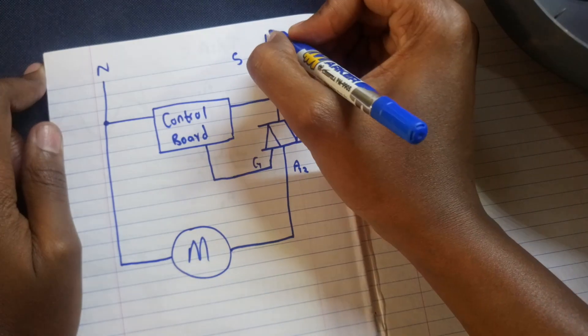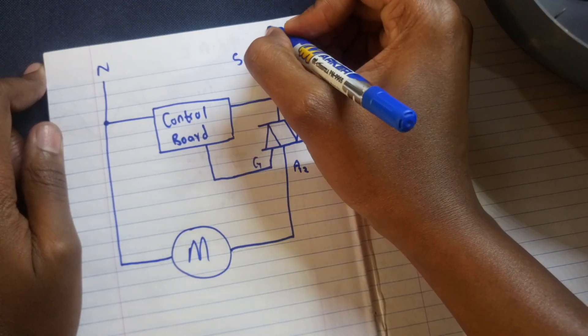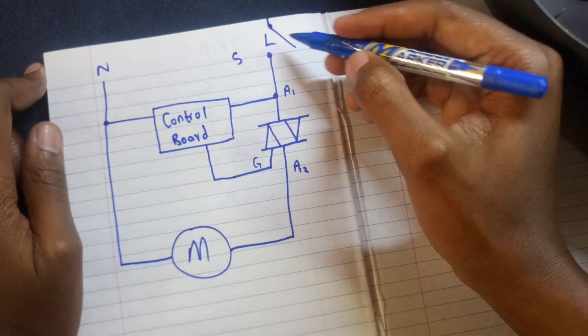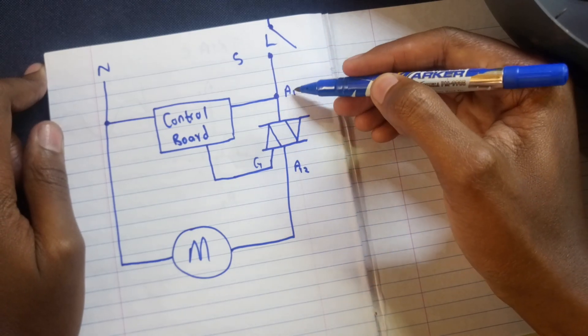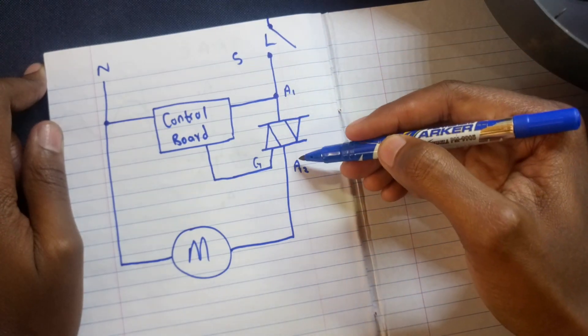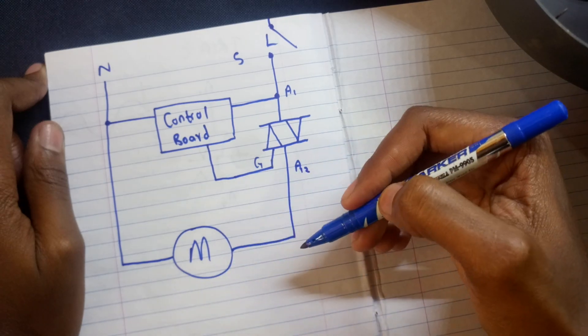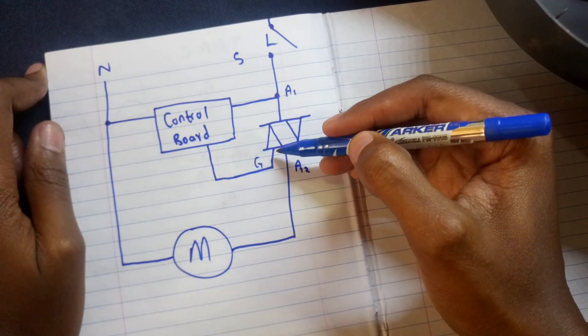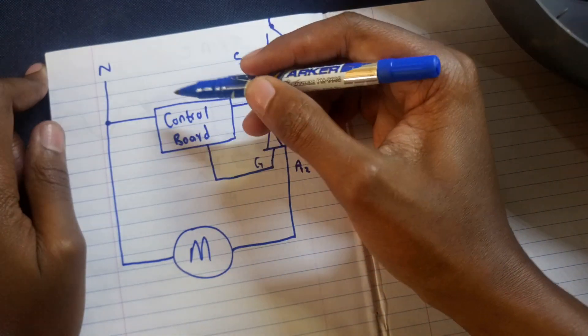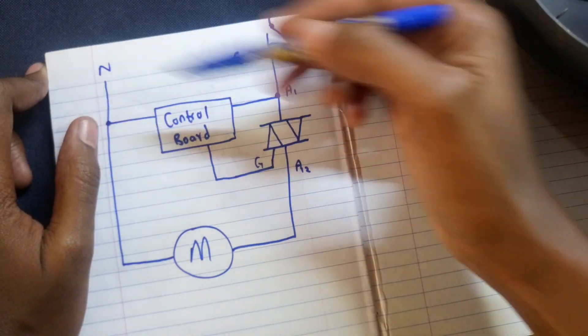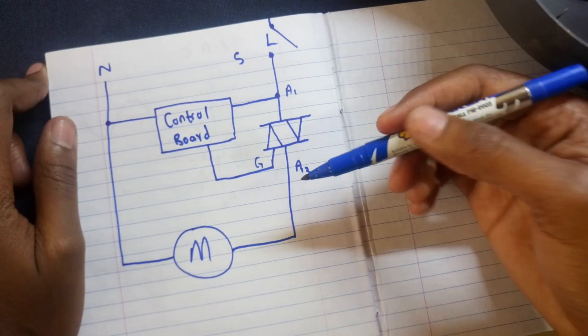That's our switch. It usually goes through the triac, through A1 and out of A2. It's connected directly to the motor, and the gate is usually connected to the control board. The control board needs both the neutral and live for it to work.